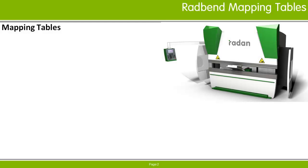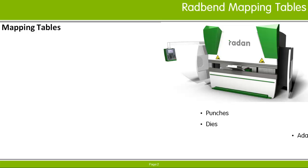The Radband tool database stores the definitions of all available punches, dies, adapters, and clamping systems. You can only use the tools in Radband that have been defined in the Radband tool database. Similarly, the material database stores the definitions of all available materials, and they can only be used in Radband if they have been defined in the Radband material database.